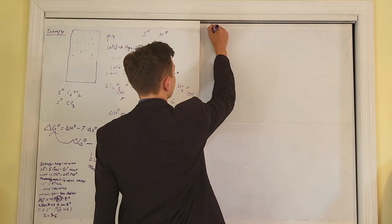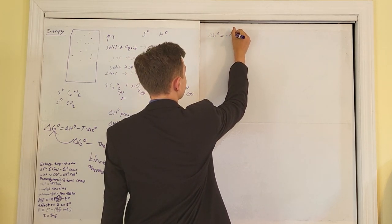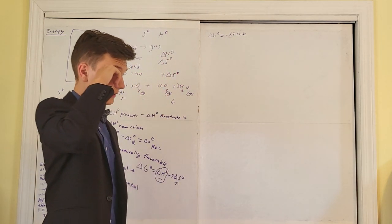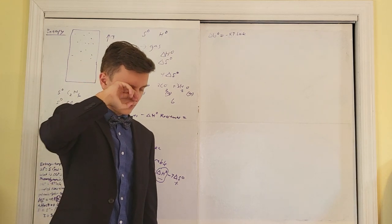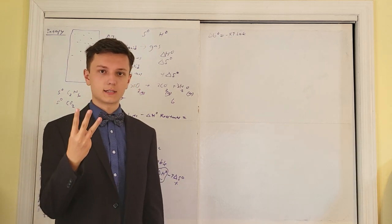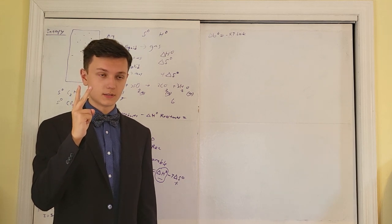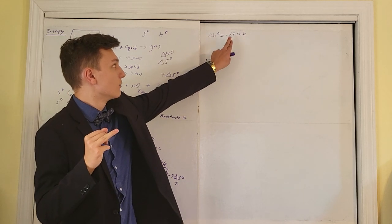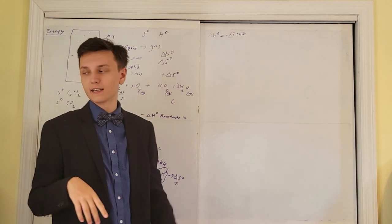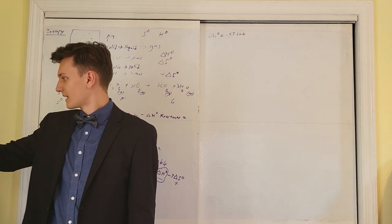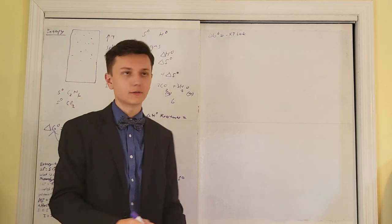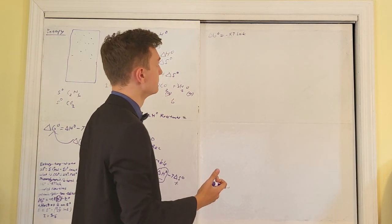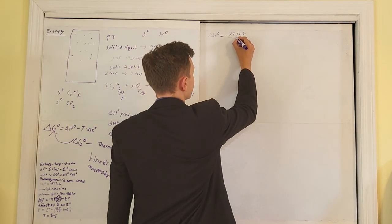We have another equation for delta G: ΔG⁰ = −RT ln K. R is the gas law constant — specifically the one in units of joules: 8.314 joules per mole per degree Kelvin. T is temperature in degrees Kelvin. Now, the key focus is the ln K component, which means delta G is related to K.